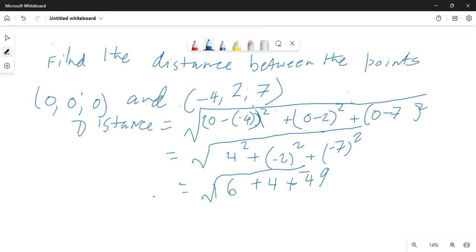So this is equal to square root of 20 plus 49 is equal to square root of 69. Okay, so that is the distance, square root of 69.